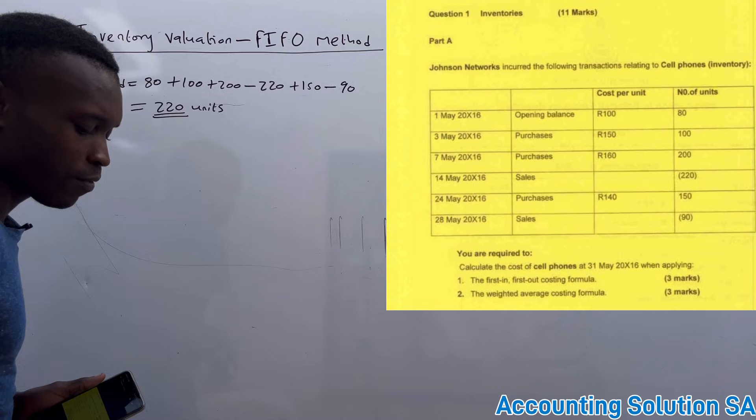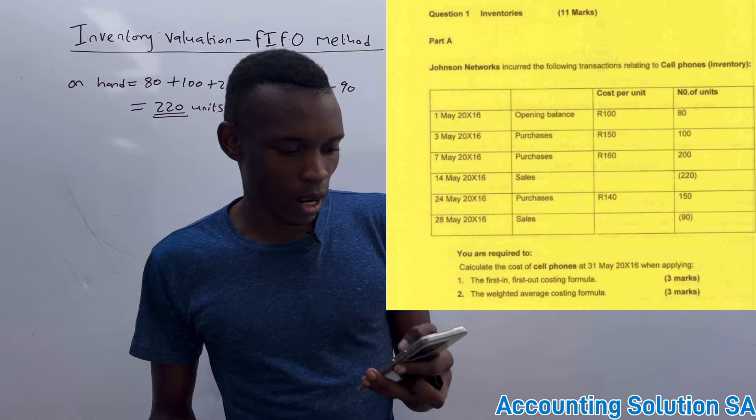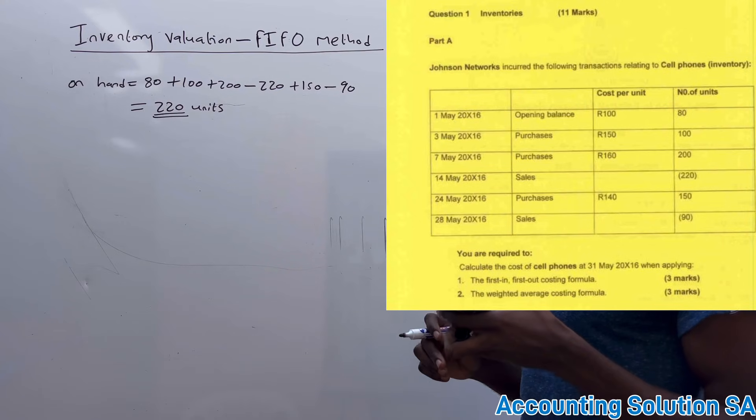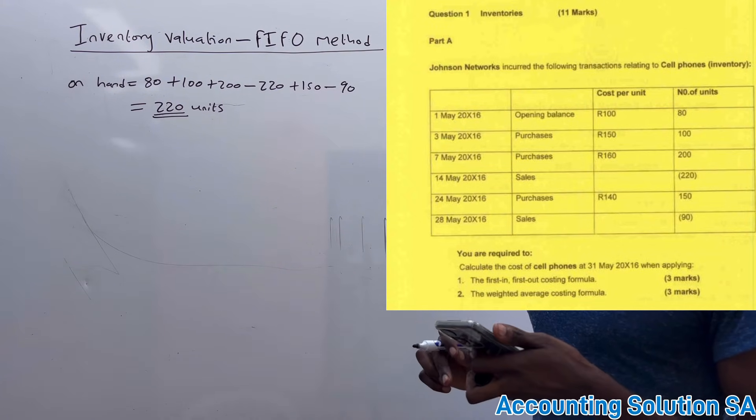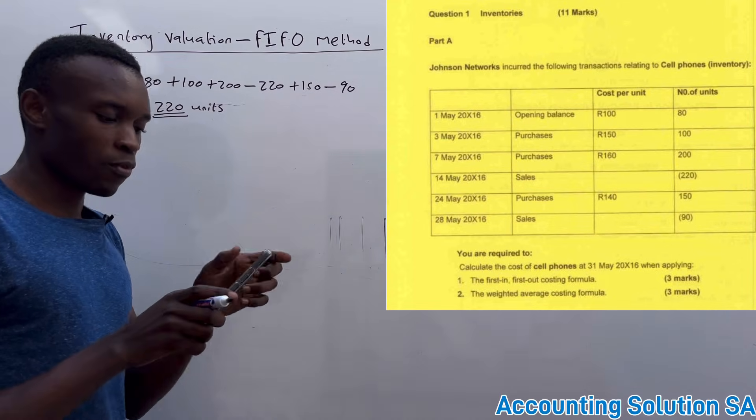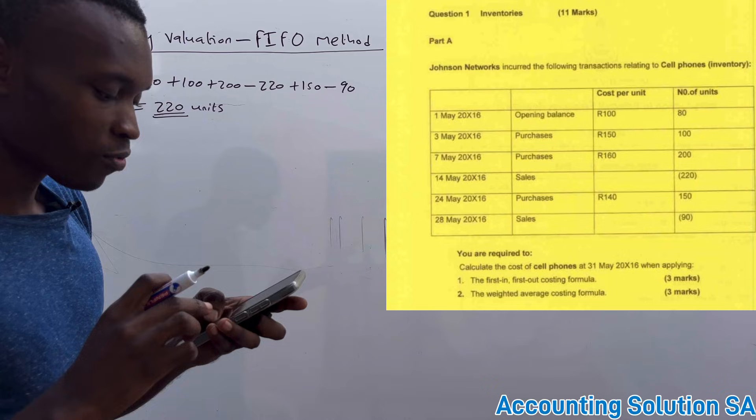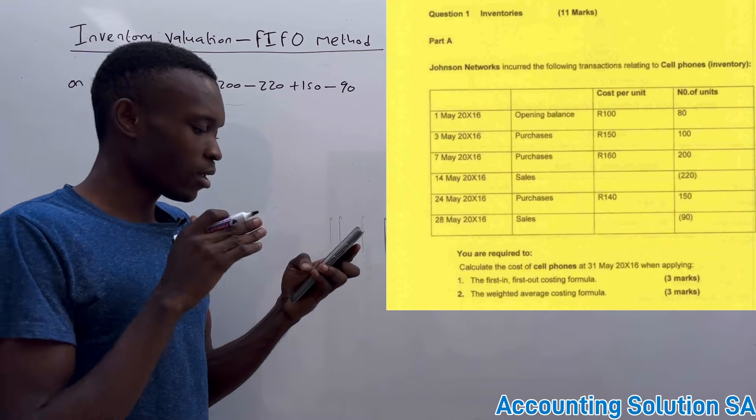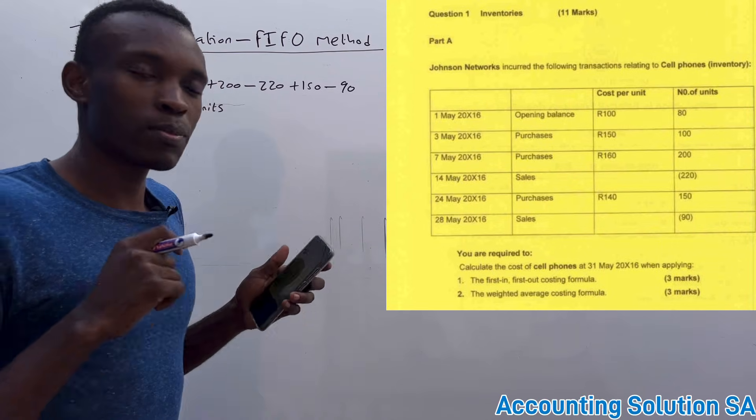That's the first step that we need to do when we calculate our First In First Out method. Now let's proceed. We have to check where does this 220 coming from. Remember the cost price of each batch is not the same - some batches are costing 100, around 150, 160, and 140, which means we must pick the correct batch so we can get the correct answer under FIFO method.